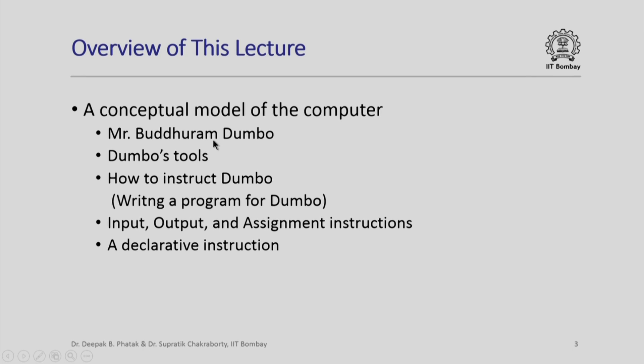In order to carry out computations, Mr. Dumbo will require certain tools. We shall see what those tools are. More importantly, since Mr. Dumbo, like a computer, can execute a computer program, we must learn how to instruct Mr. Dumbo. In short, we will learn how to write a program for Dumbo. More specifically, we shall see the input, output, and assignment instructions, and finally a declarative instruction which shall permit us to tell Mr. Dumbo that we are going to use such and such names in our program.